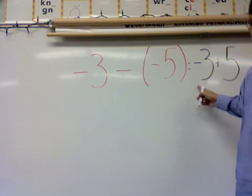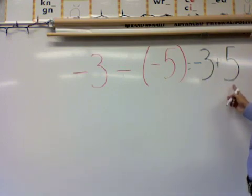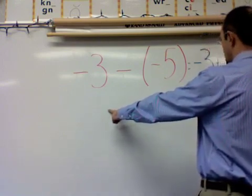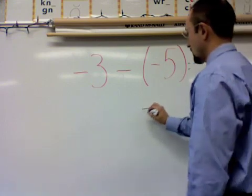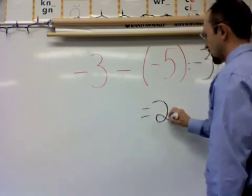So now I have negative 3 plus 5. Remember, my negative 3 will be on the left side of the number line. I'm going to move over 5 spaces, and when I move over those 5 spaces I end up with 2.